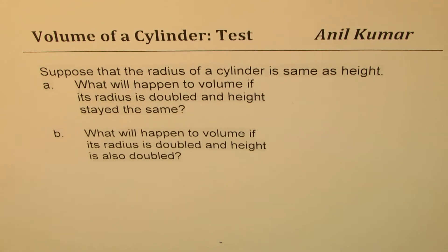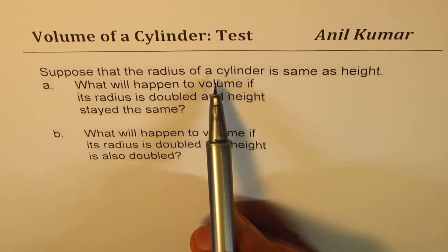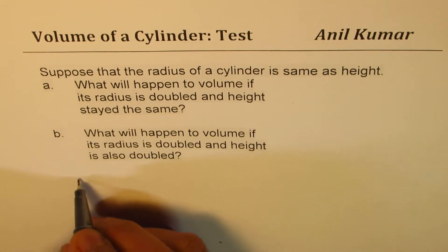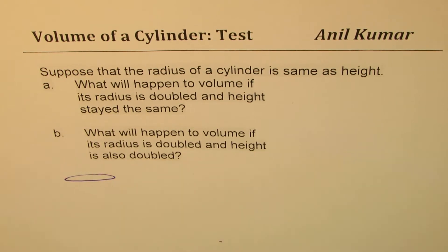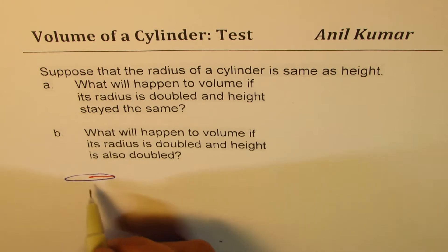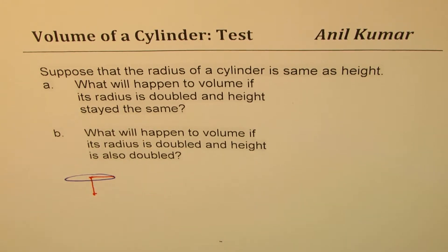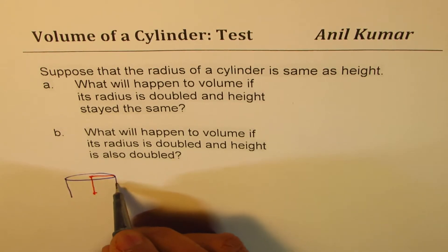I'm Anil Kumar sharing with you some thinking questions on volume of cylinder. The question here is: suppose that the radius of a cylinder is same as height. So what we are given here is the radius is same as height. The radius is this much, and we are saying this is same as height. So suppose that the radius is same as height, and we have a cylinder which is kind of like this.